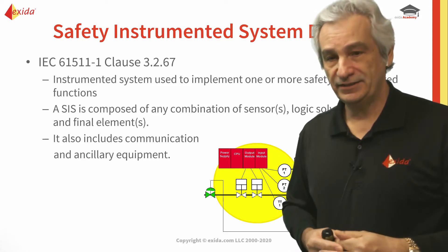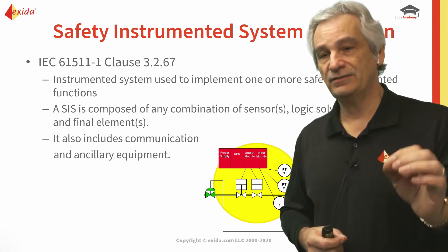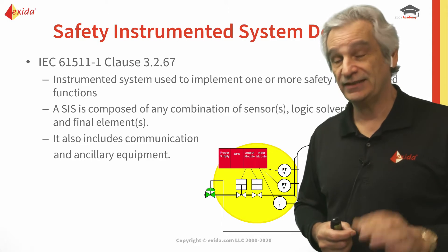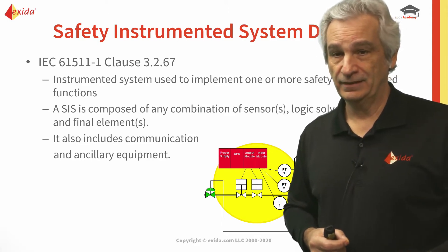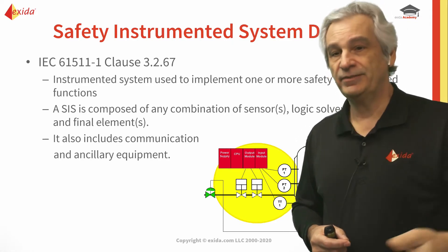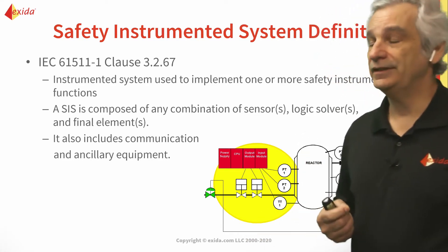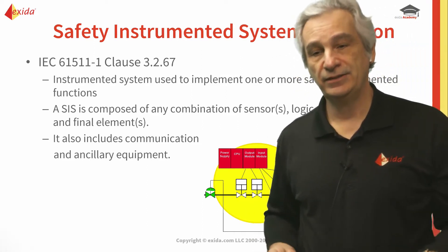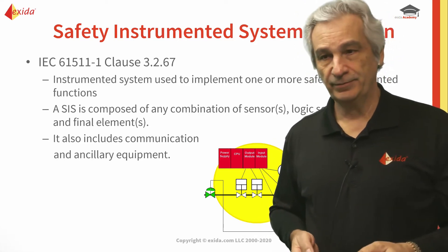The reason is that a safety instrumented system can consist of one or more safety instrumented functions, and these safety instrumented functions can have different SIL requirements. That is the important distinction. A SIS is composed of combinations of sensors, logic solvers, and final elements, and it can include ancillary equipment such as power supplies and communications — all of which must be considered, certainly from the logic solver point of view.